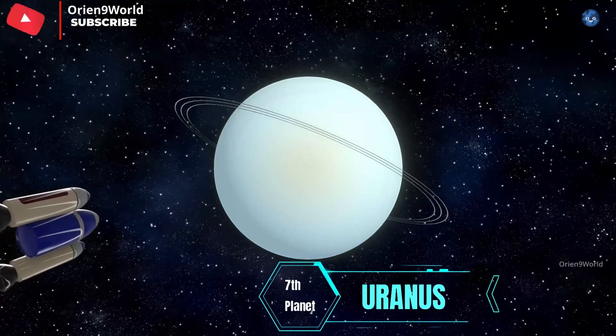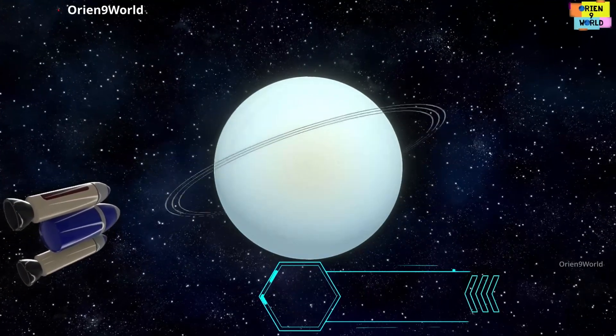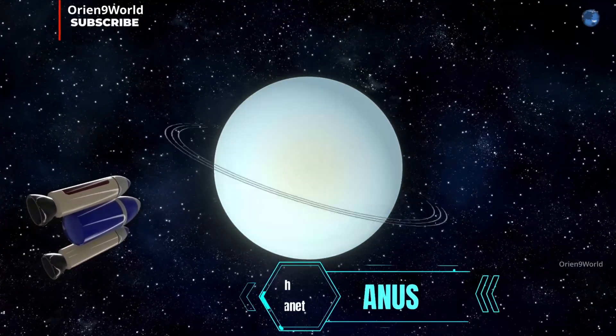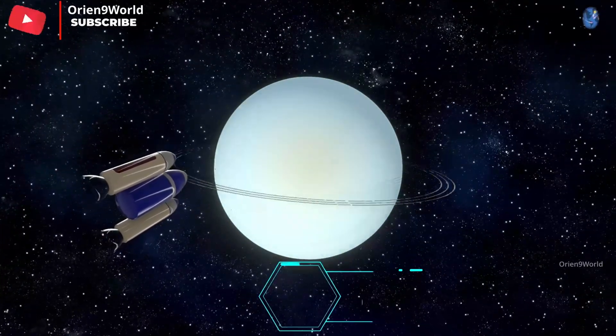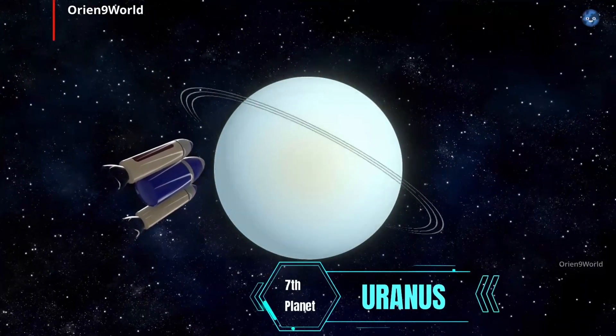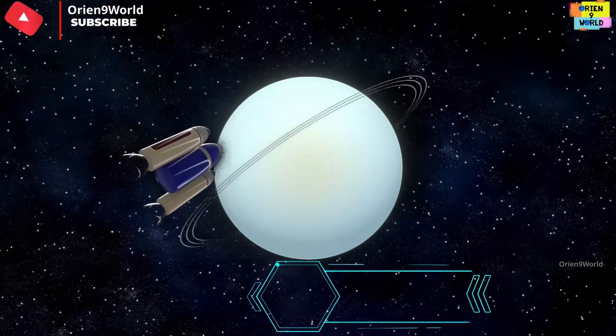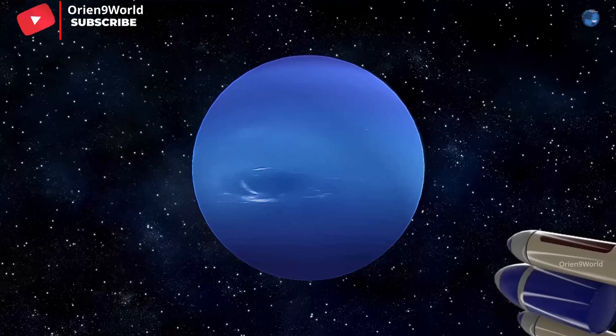My name's Uranus, I am blue in color, I'm the seventh planet from the sun. Humans have named me the icy planet because I am the coldest one.